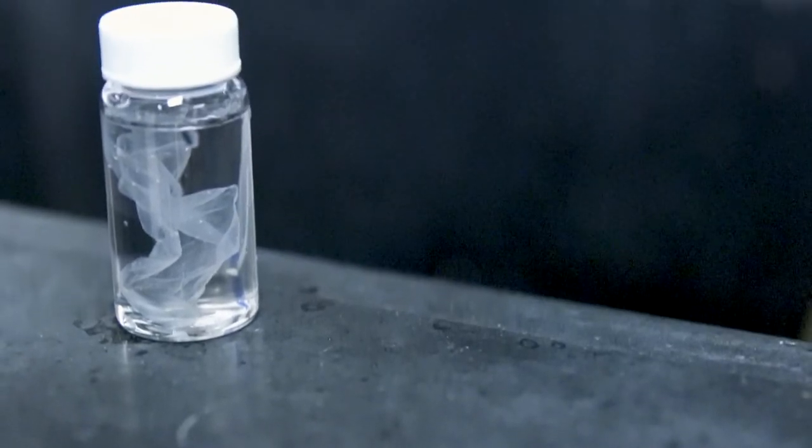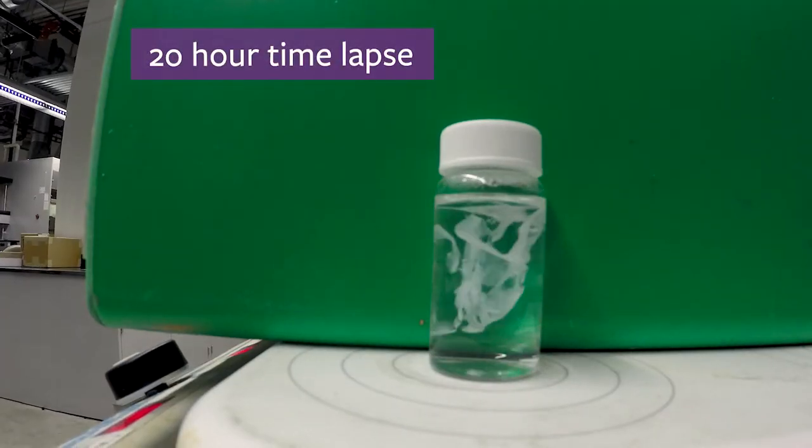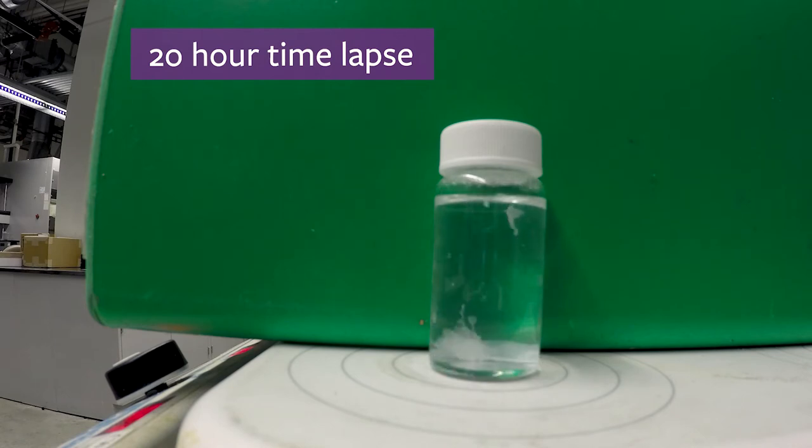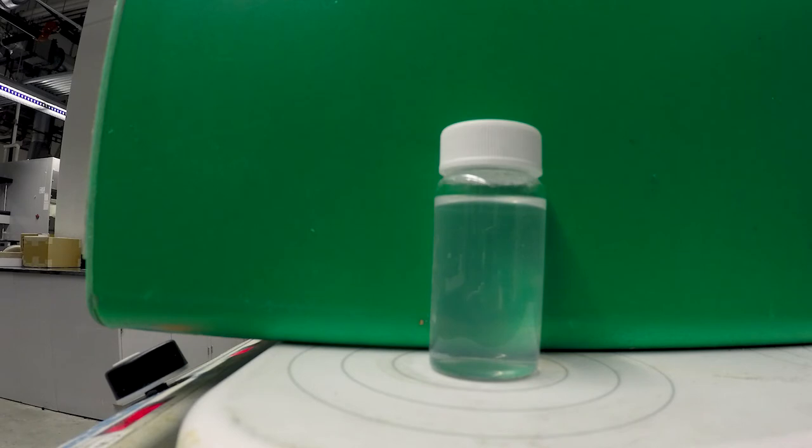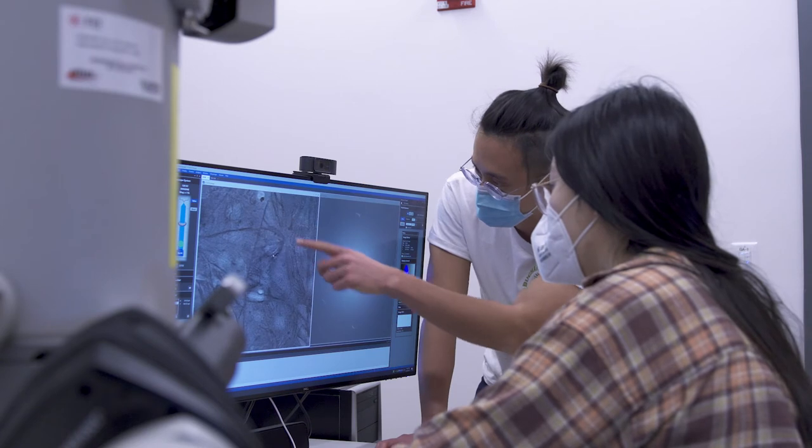We first experimented with degrading our plastics in water at various temperatures with different compositions of enzymes and protectants. We found that when we put them in water, within 24 hours you can barely see a plastic there, and within a week we looked under a microscope and saw that there was nothing left. There were almost no microplastics.